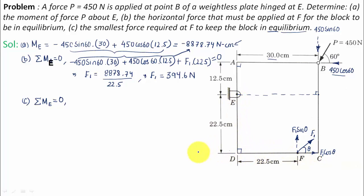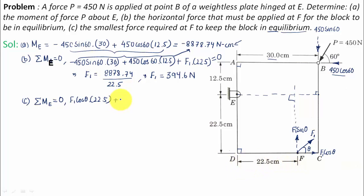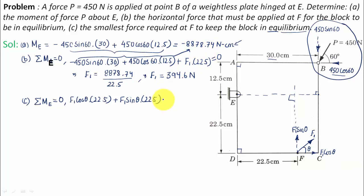F1 cos theta, keeping your thumb at E and moving in that direction, produces an anticlockwise moment: F1 cos theta multiplied by 22.5. F1 sin theta also produces an anticlockwise moment — its perpendicular distance from E is also 22.5 — so we add positive F1 sin theta multiplied by 22.5. The remaining forces 450 sin 60 and 450 cos 60 together contribute a net moment of negative 8878.74. Setting the total equal to zero gives the equilibrium equation.